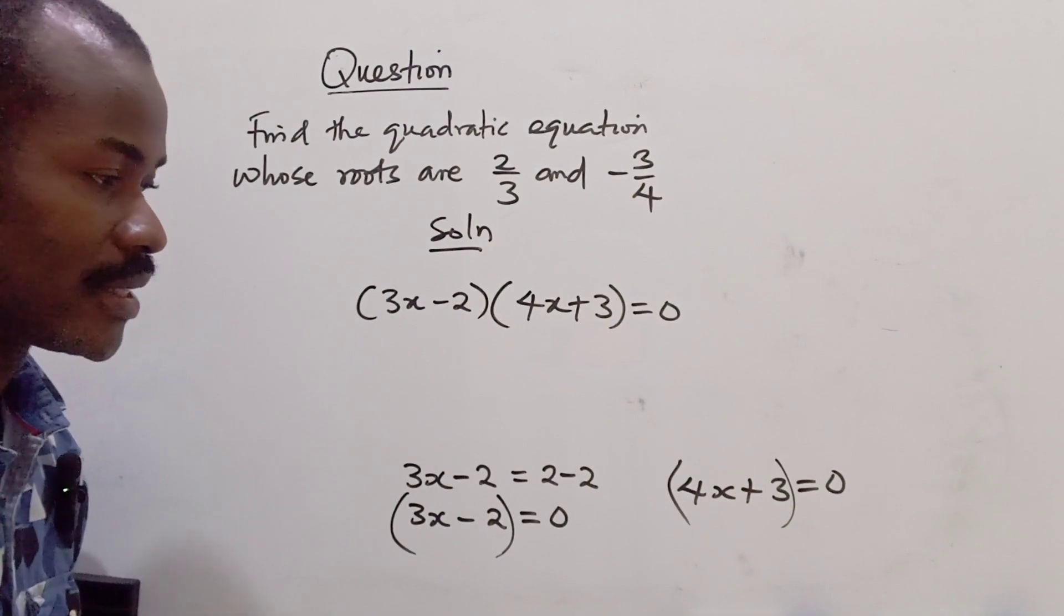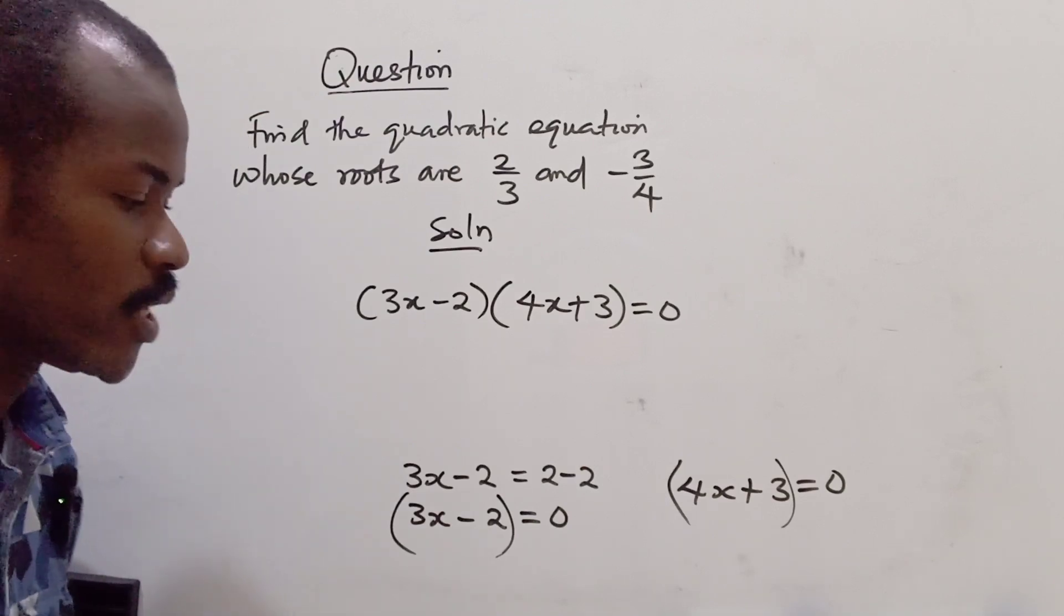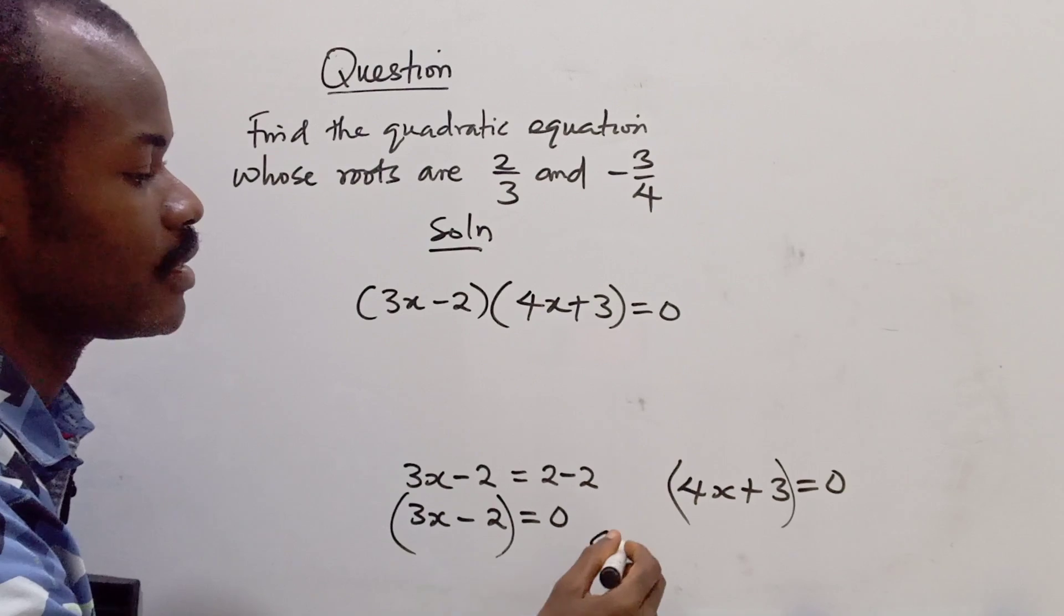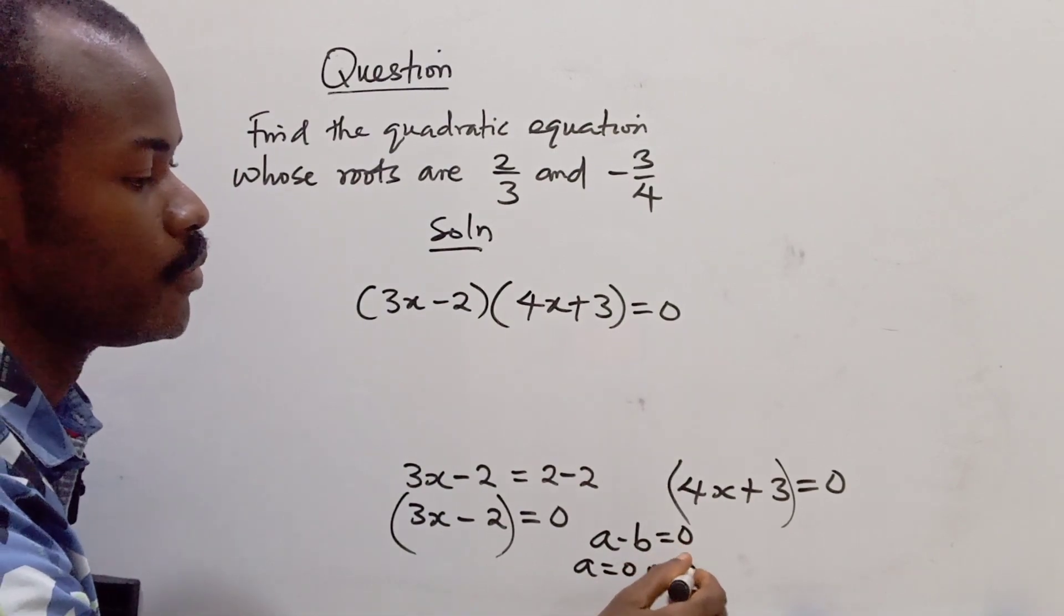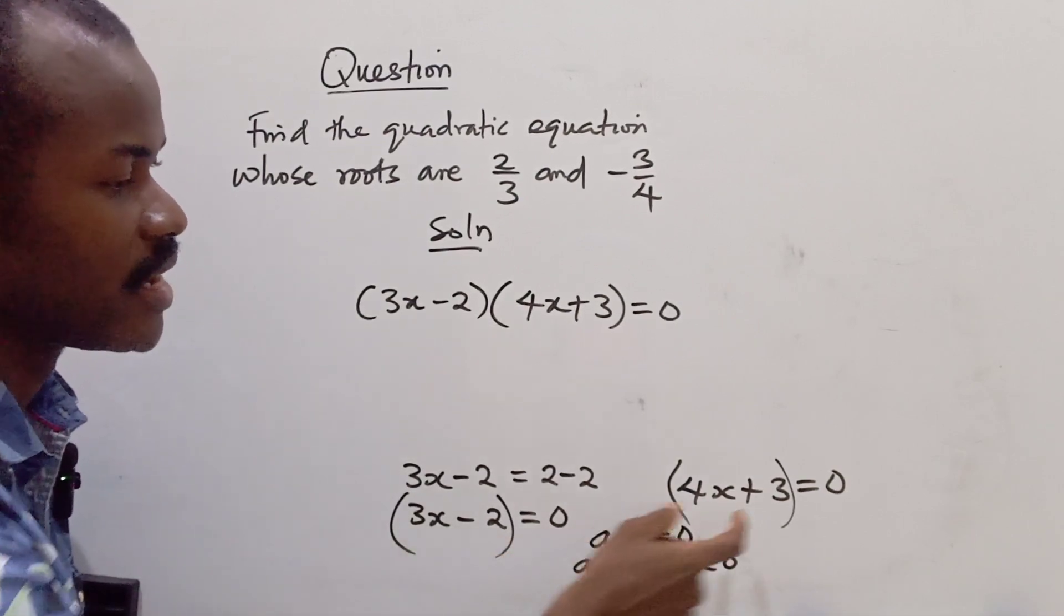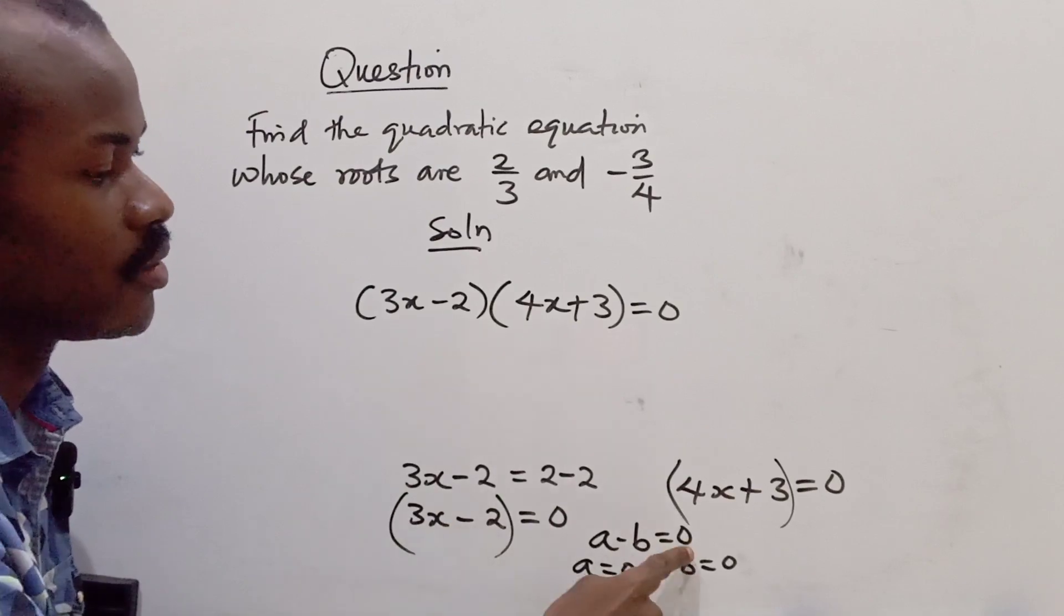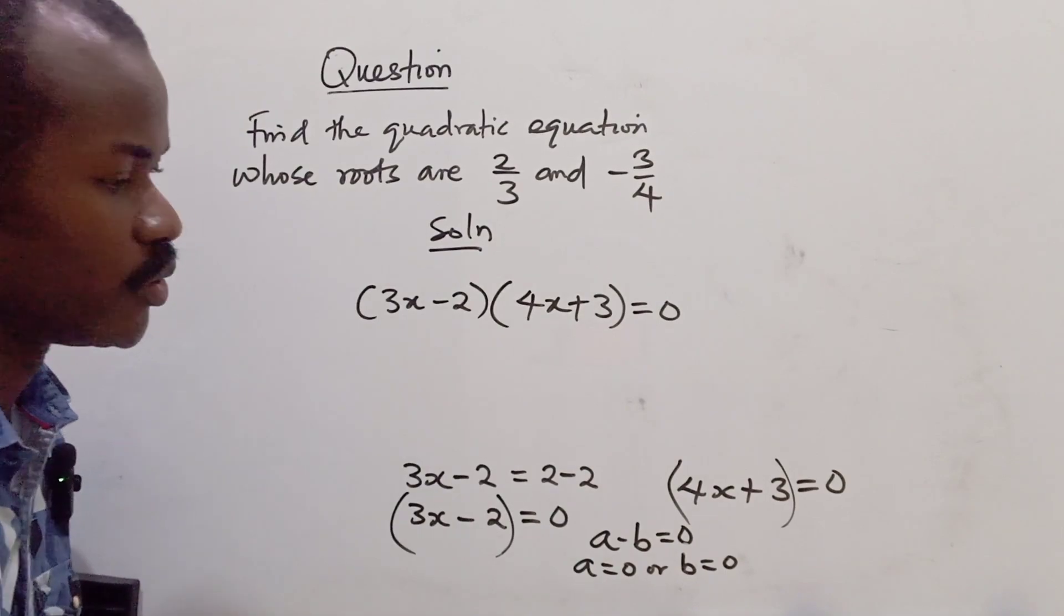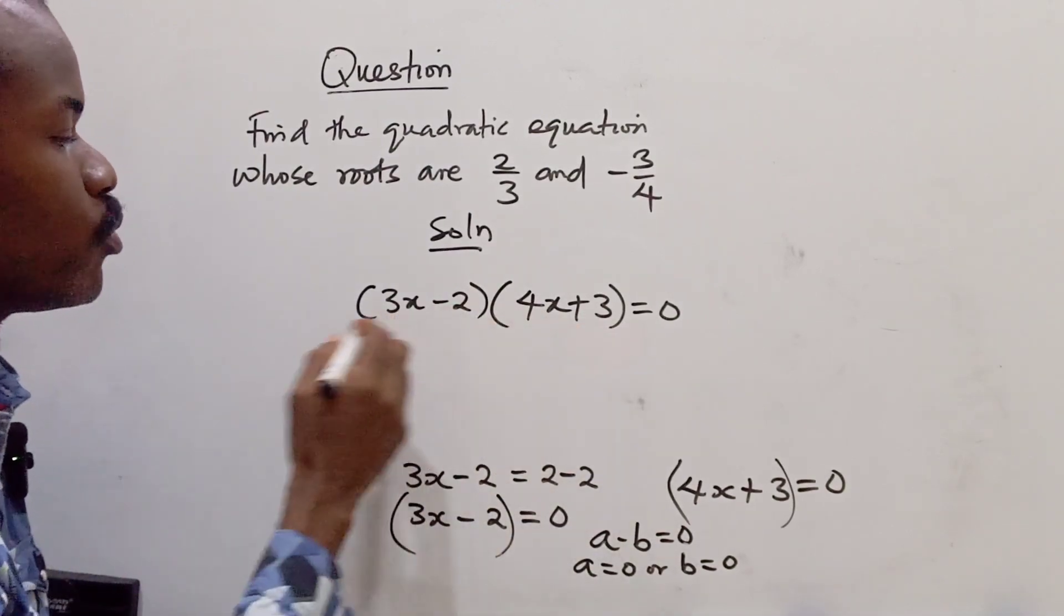So when you're solving the quadratic equation, either you get to the point where this equals 0 or this equals 0. Where we have a multiplied by b equals 0, we have that a equals 0 or b equals 0. So if this equals 0 and this equals 0, that's what we have here. It means that these quantities can also equal 0. So we have this expression using the reverse form. Now from this, we can open the brackets.